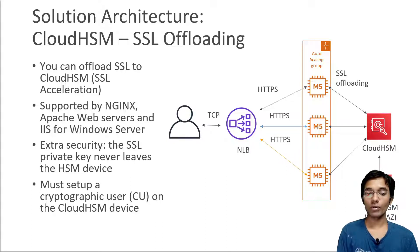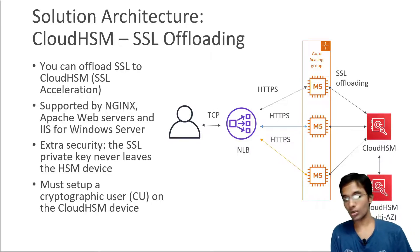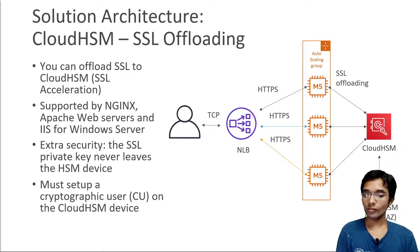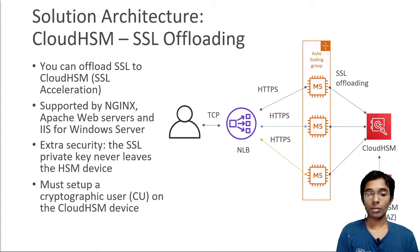An extra level of security is that the SSL private key will never leave the Hardware Security Module (HSM) device, making it extra secure. To make this work, you need to set up a cryptographic user (CU) on the CloudHSM device — this is a multi-AZ setup — and make sure your EC2 instances can use that cryptographic user. You can store the username and password in the SSM Parameter Store. There are many ways of doing this architecture, but using CloudHSM SSL offloading is one of the most secure and one of the most convenient options.